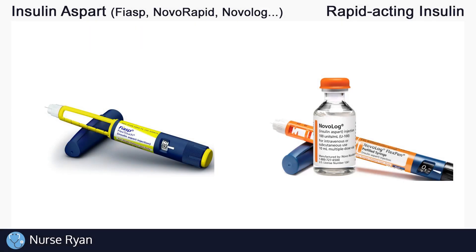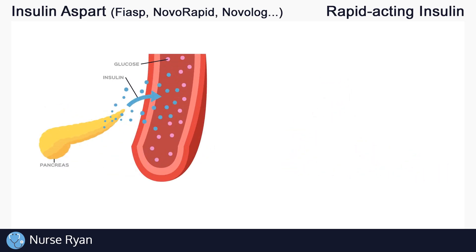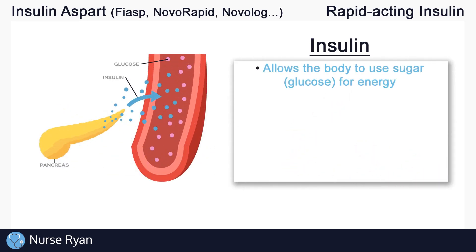Before we get into Insulin Aspart specifically, let's do a quick overview of insulin in general and the four main types of insulin. Insulin is extremely important — it allows our bodies to use the sugar that we get from eating, like glucose, for energy. Our bodies and our cells need energy in order to function.